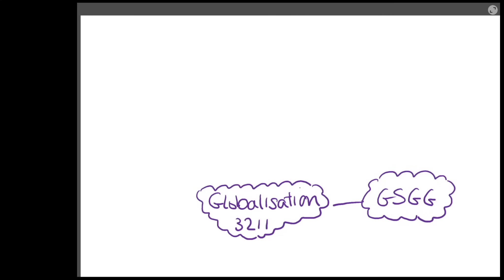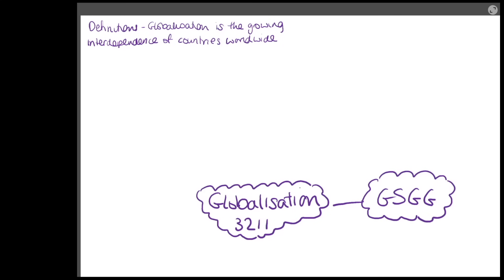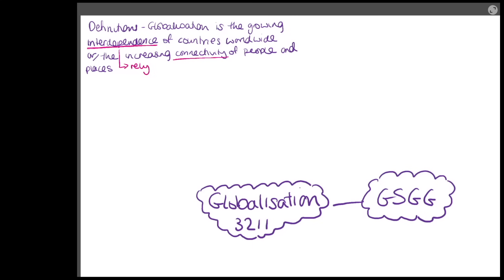We're going to start with the definition of globalisation. Globalisation is the growing interdependence of countries worldwide, or it is the increasing connectivity of people and places. Interdependence - meaning countries rely on each other - is key terminology in the A-level specification, and we're going to keep coming back to it.